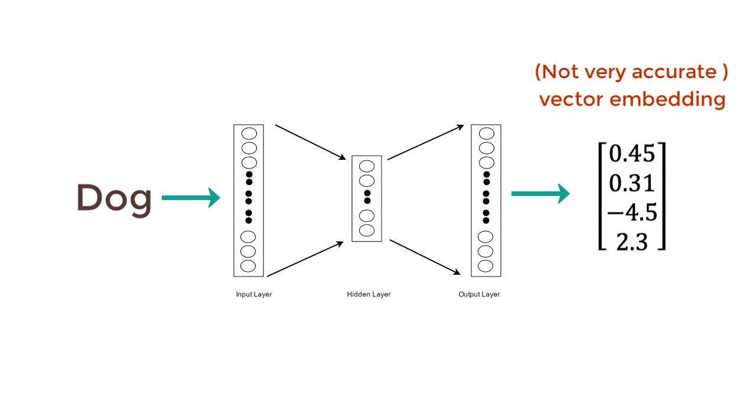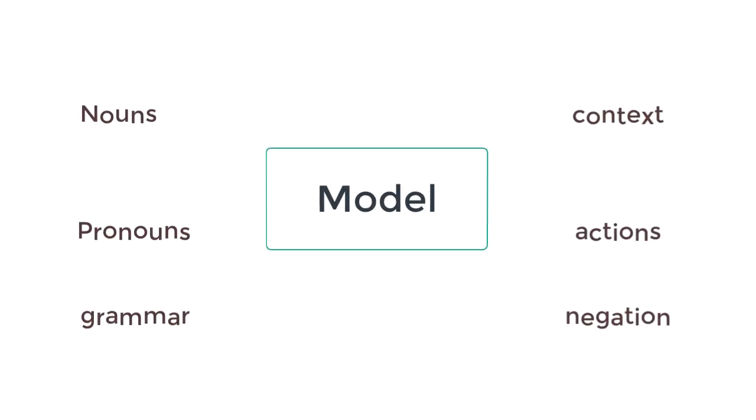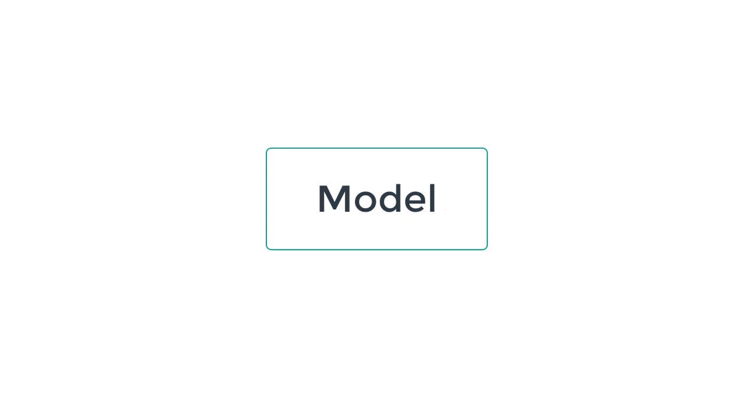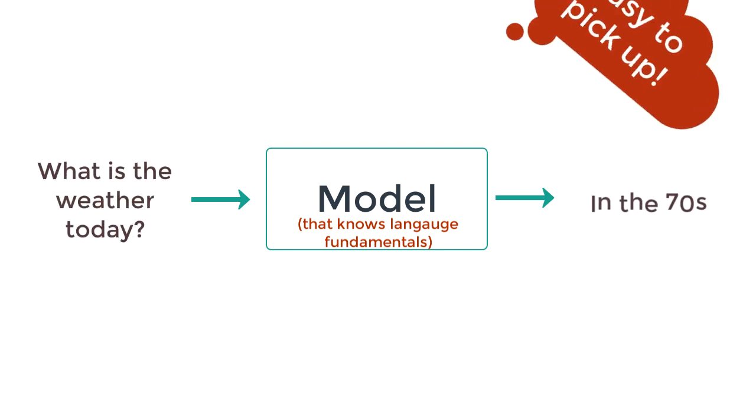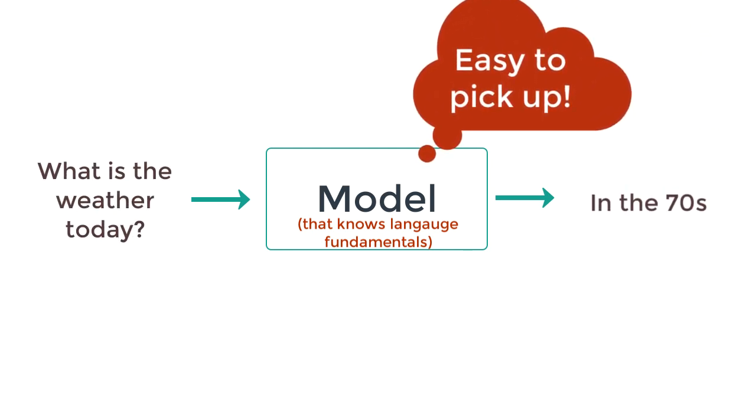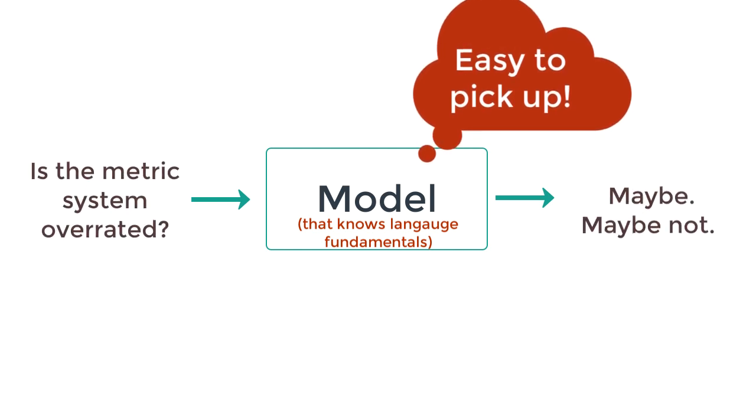Instead of a layer to generate embedding, what if we pre-trained a model to learn the basics of language and then fine-tune this model for different NLP tasks? Knowing the fundamentals of language, it becomes easier to pick up different tasks. This is the goal that deep learning in NLP has been striving to address.